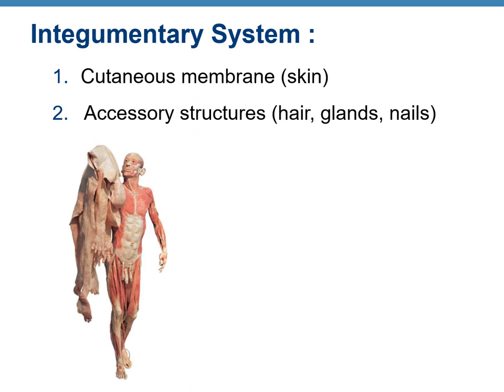The integumentary system consists of your skin — the cutaneous membrane — and accessory structures or accessory organs such as hair, glands, and nails.